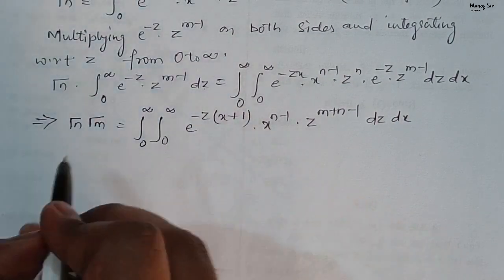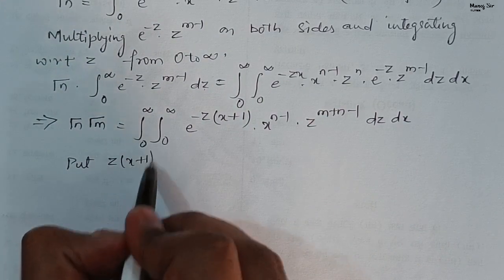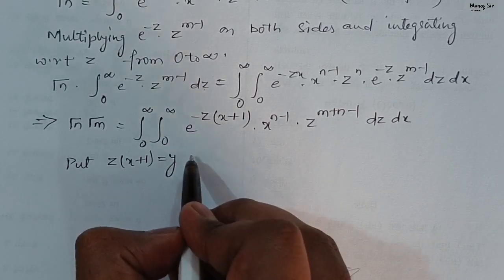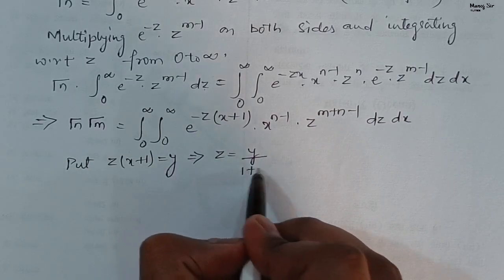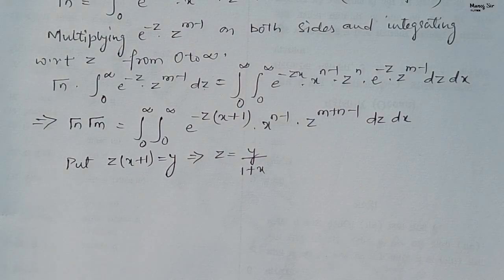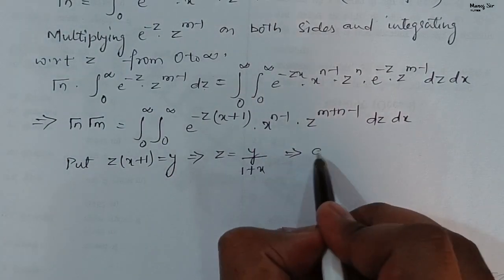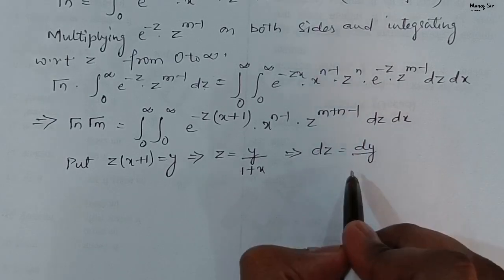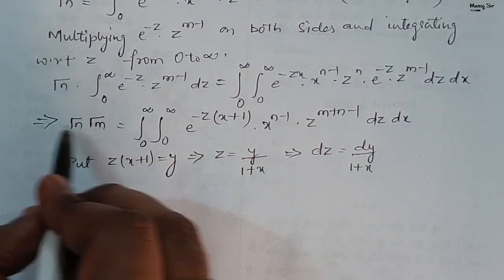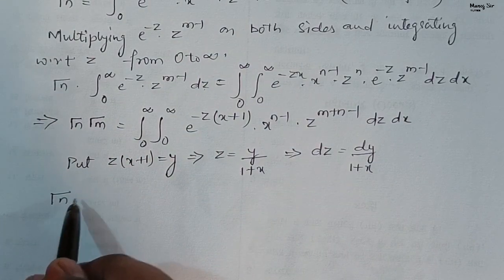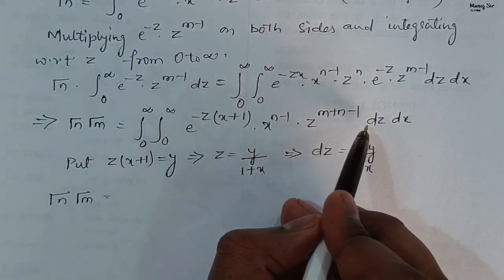Now we will substitute: put z times (1 plus x) equals to y. From here, z equals to y upon 1 plus x. Differentiating, we get dz equals to dy upon 1 plus x. So gamma n times gamma m equals to the double integral with the substitution applied.